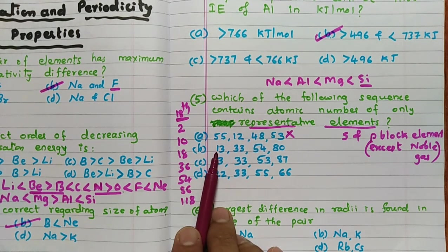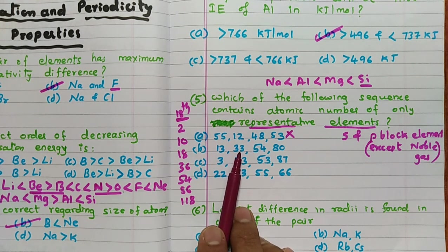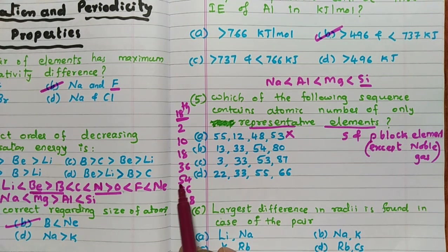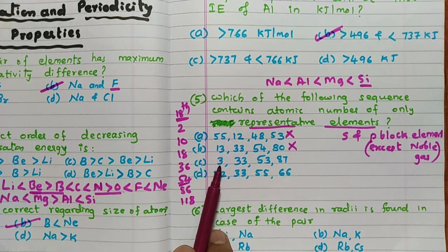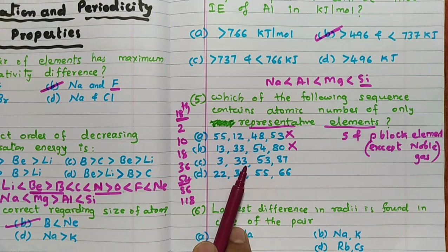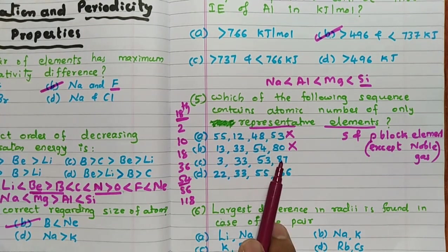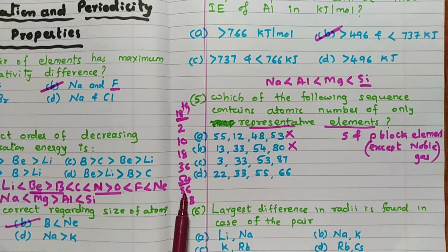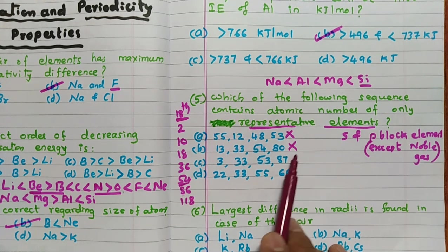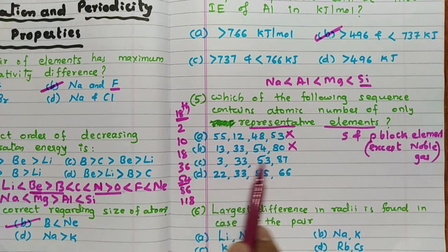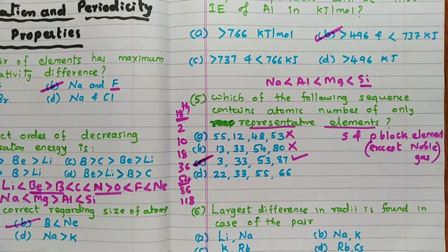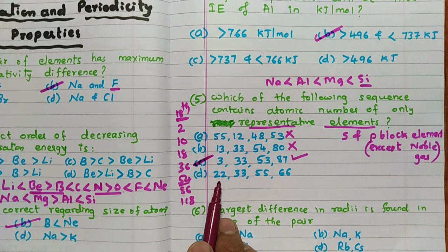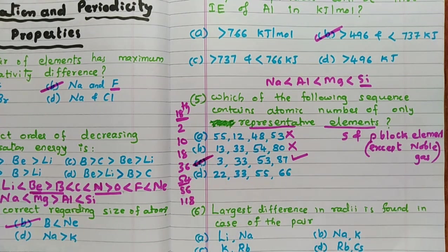Next option: 3 is S-block (lithium), 33 is P-block (15th group), 53 is also P-block, and 87 is S-block because 86 is a noble gas so 87 is S-block. There is no noble gas in this sequence and all elements are S and P block — so the answer for this question is C. Option D has 22 which is titanium, a D-block element, so that is not needed. C is the answer.